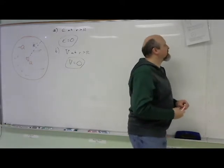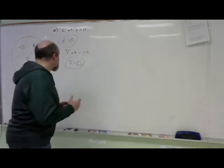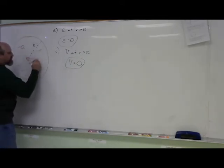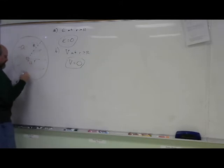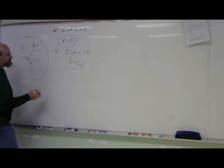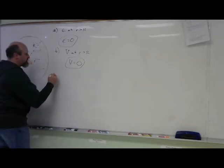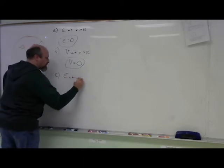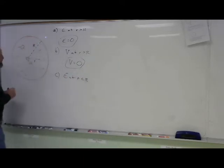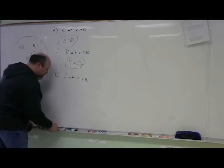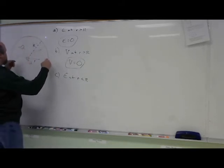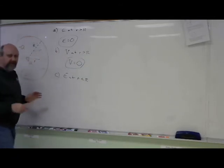Part C: find the electric field inside the sphere, at some distance r less than R. E at r less than R. Out here the E fields — inward from the negative and outward from the positive — are perfectly balanced. But heading inside, I remember from Gauss's law that it's just the charge inside the Gaussian surface volume that matters.